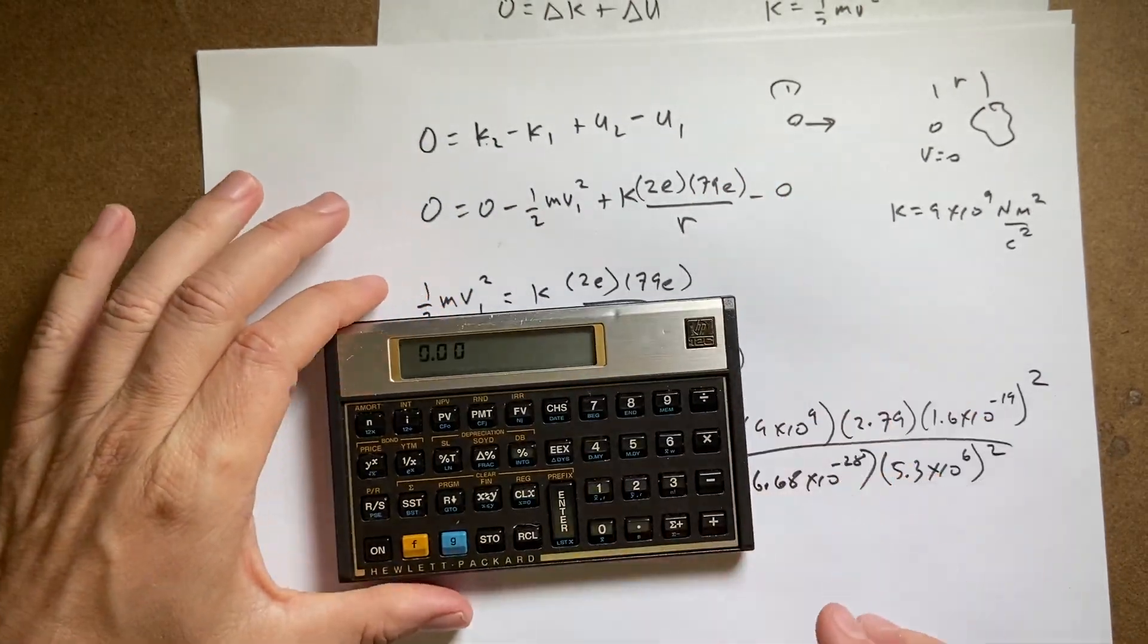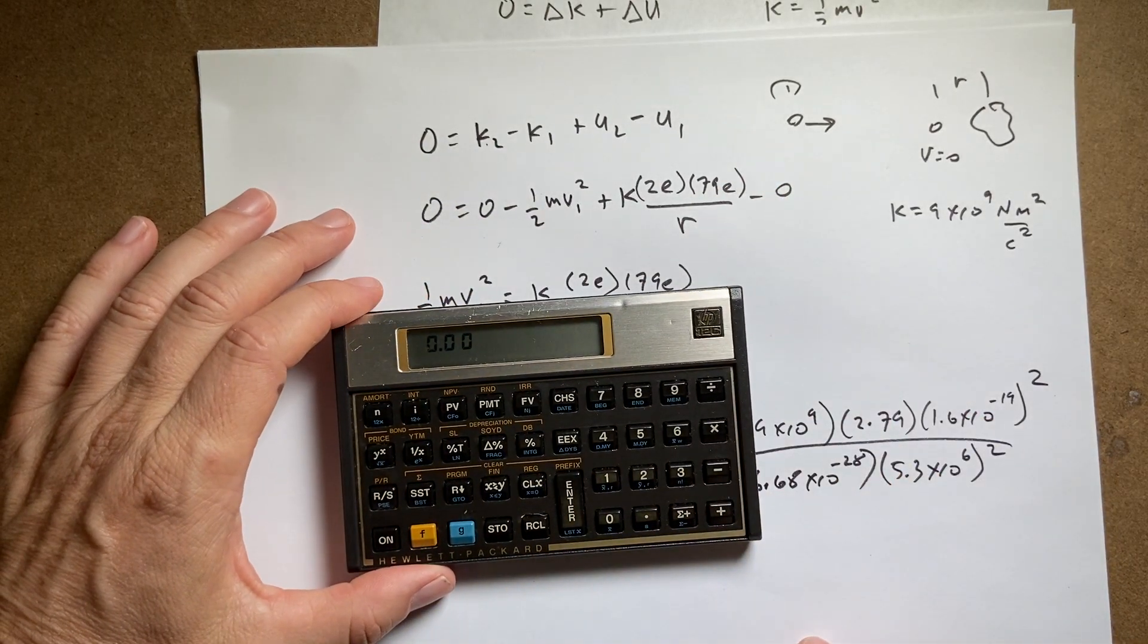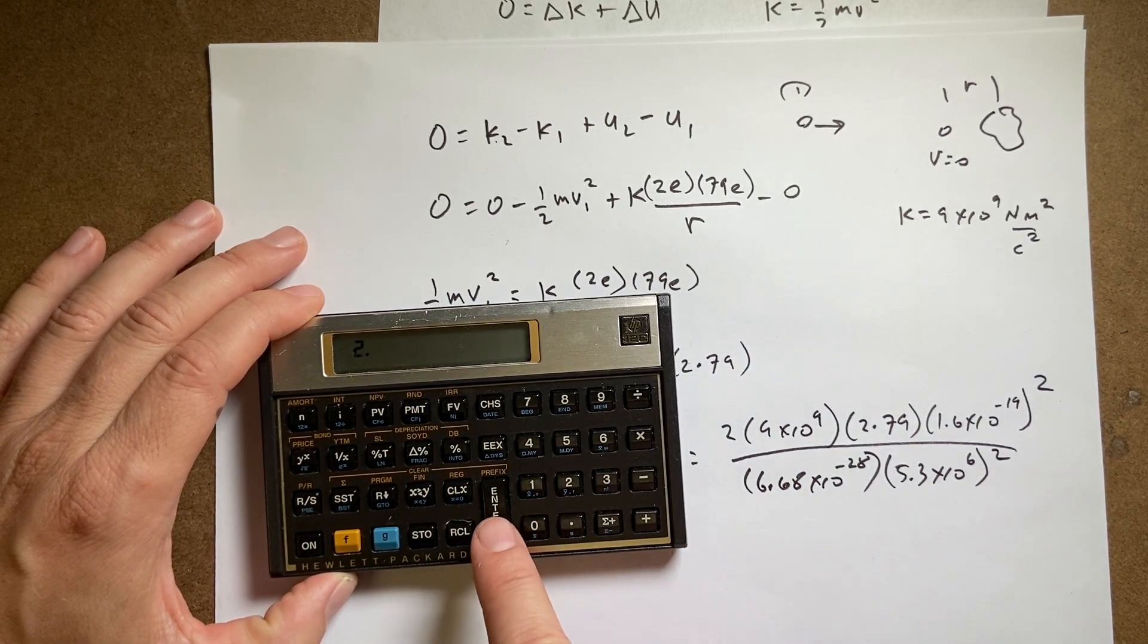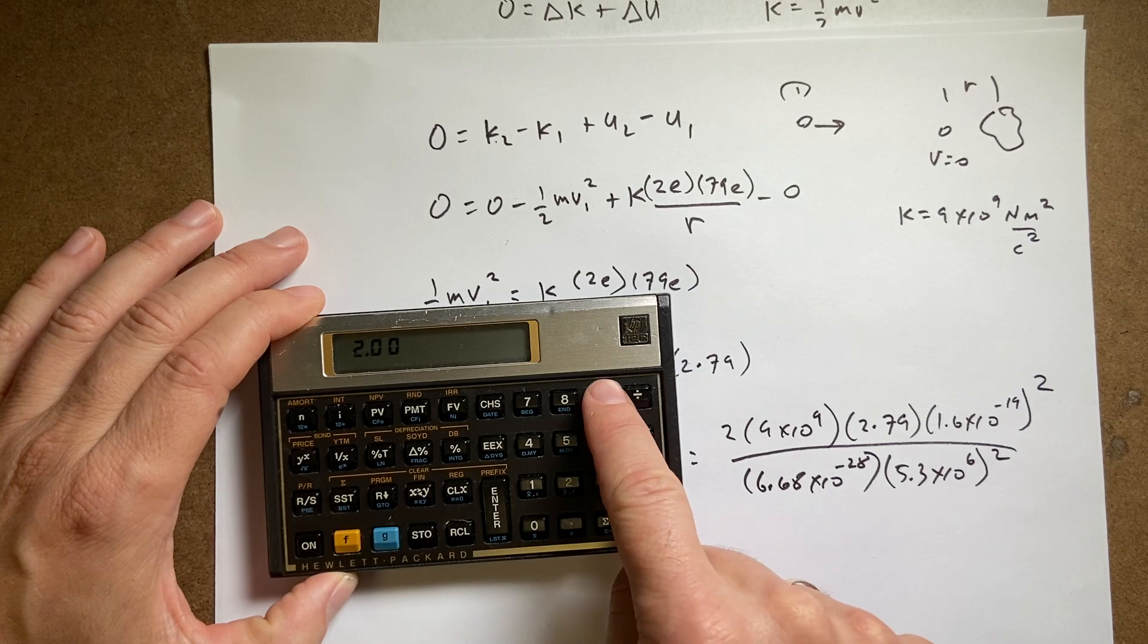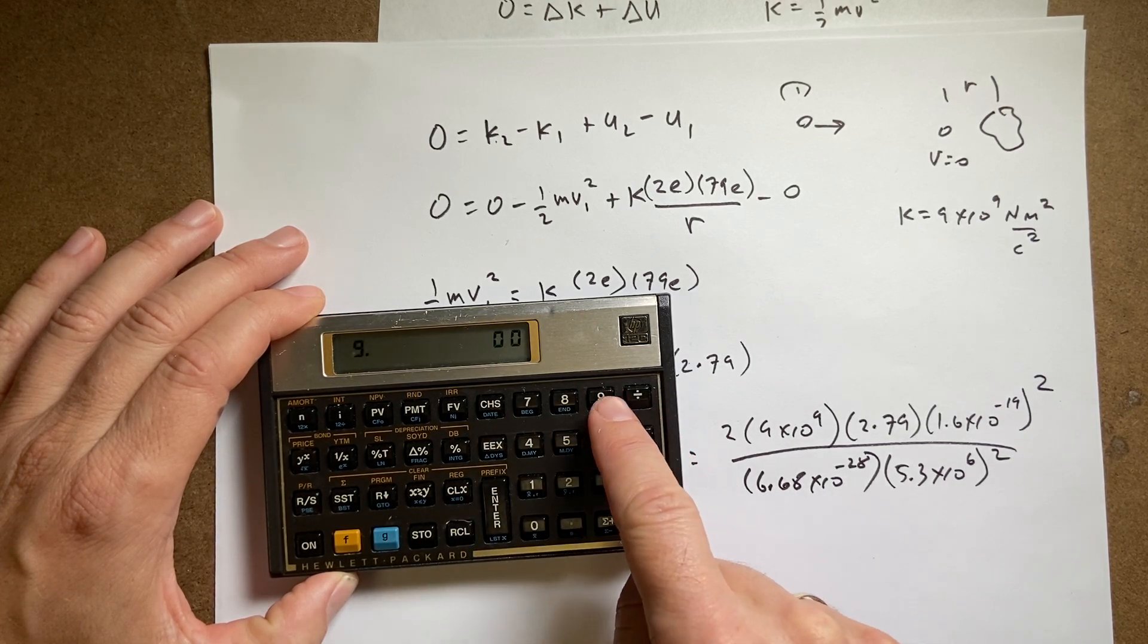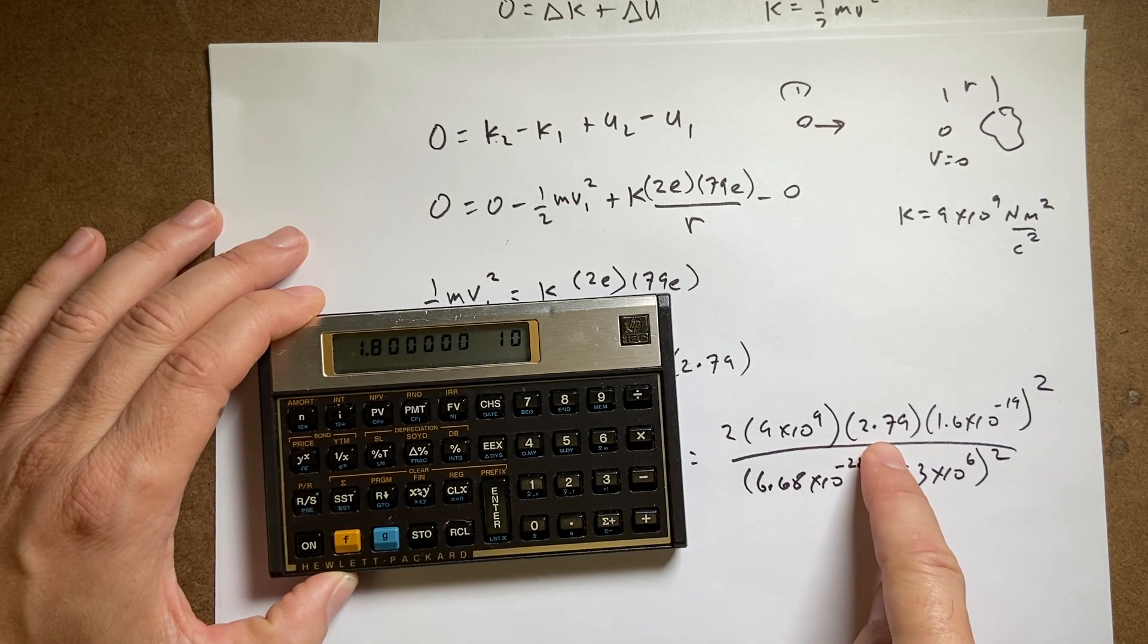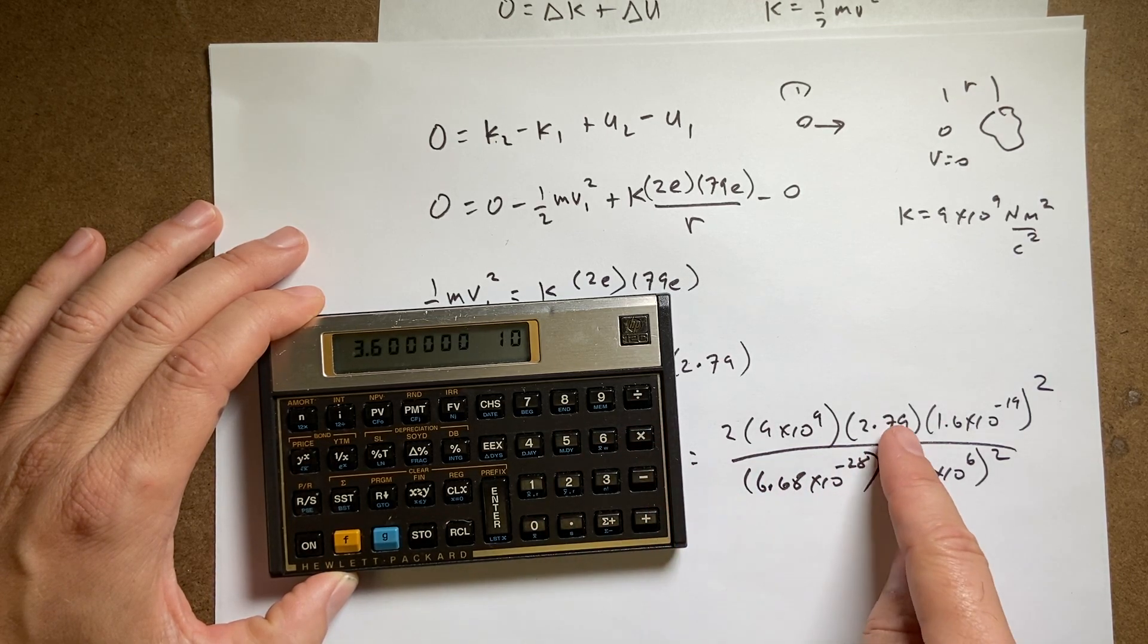Okay. So I'm going to take my calculator. I don't know if you can see that. That's good enough. Okay. So let's just go clear to enter this 9 times 10 to the 9th times. Now I need to multiply by 2. 2 times 79.